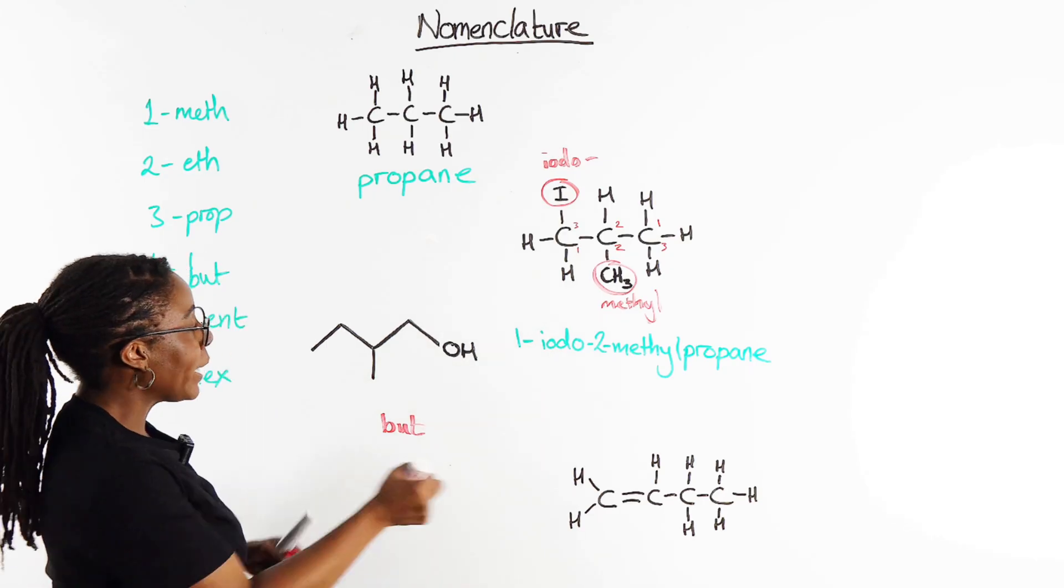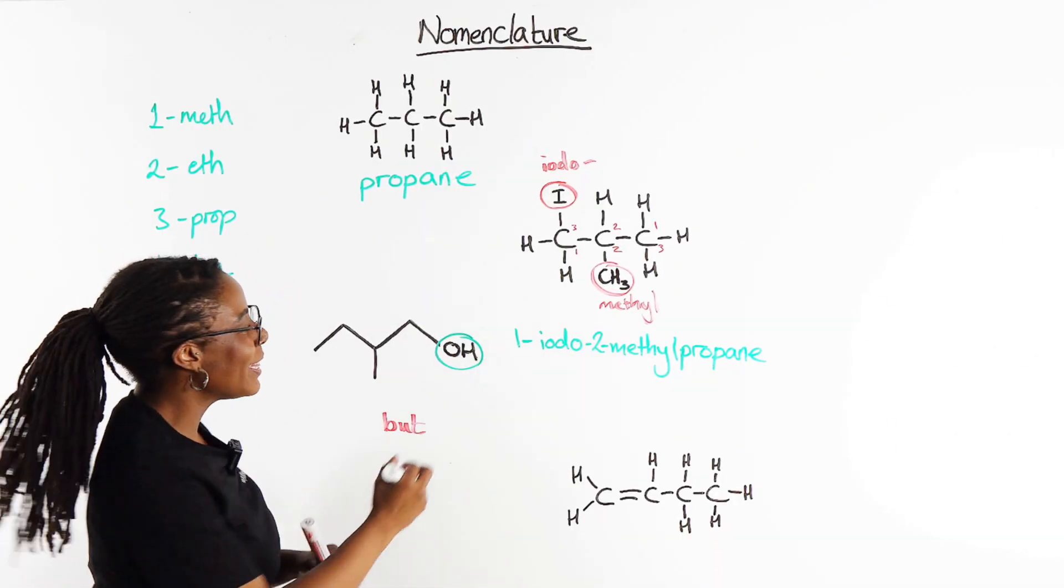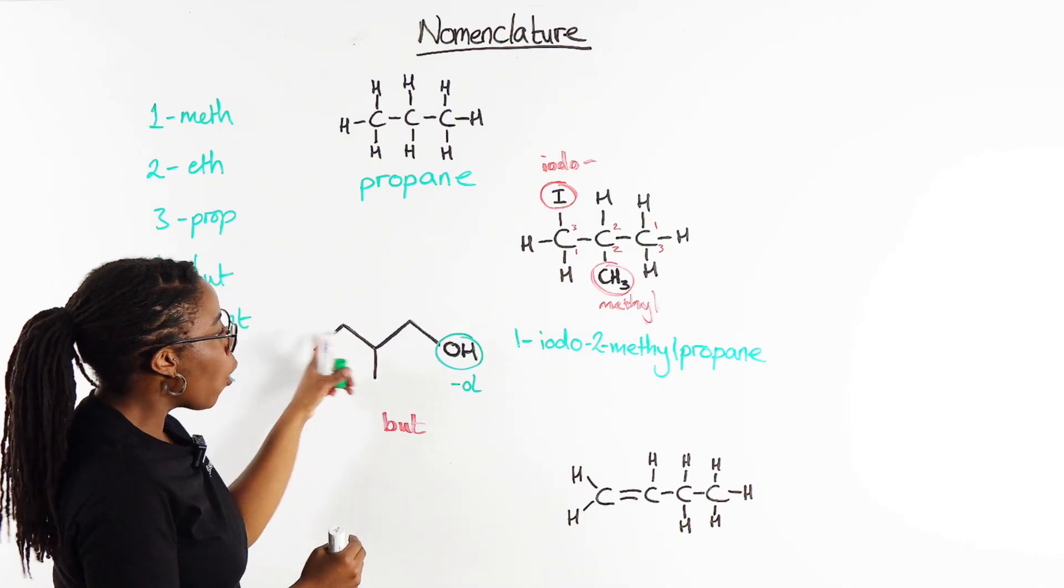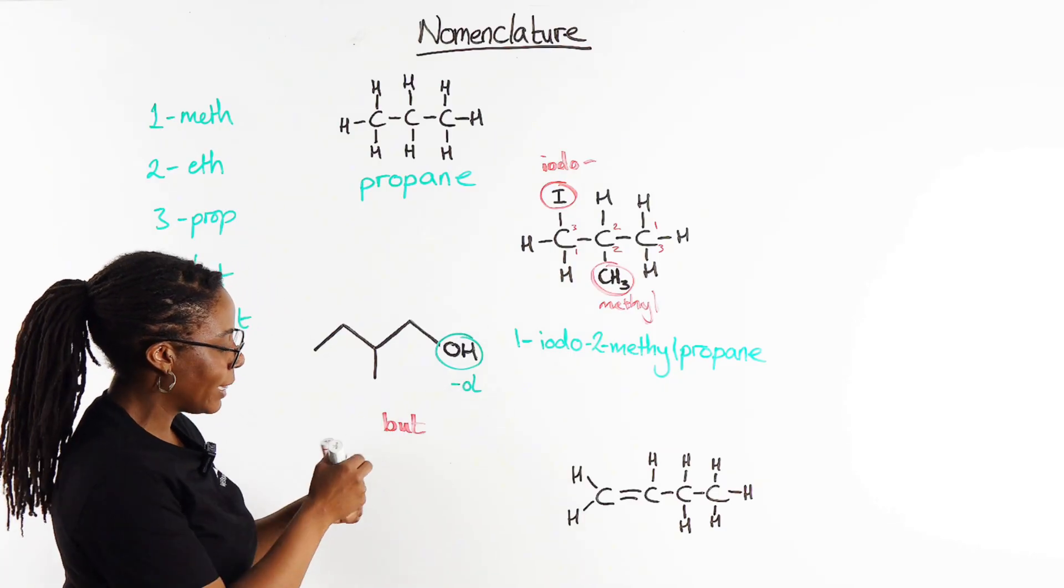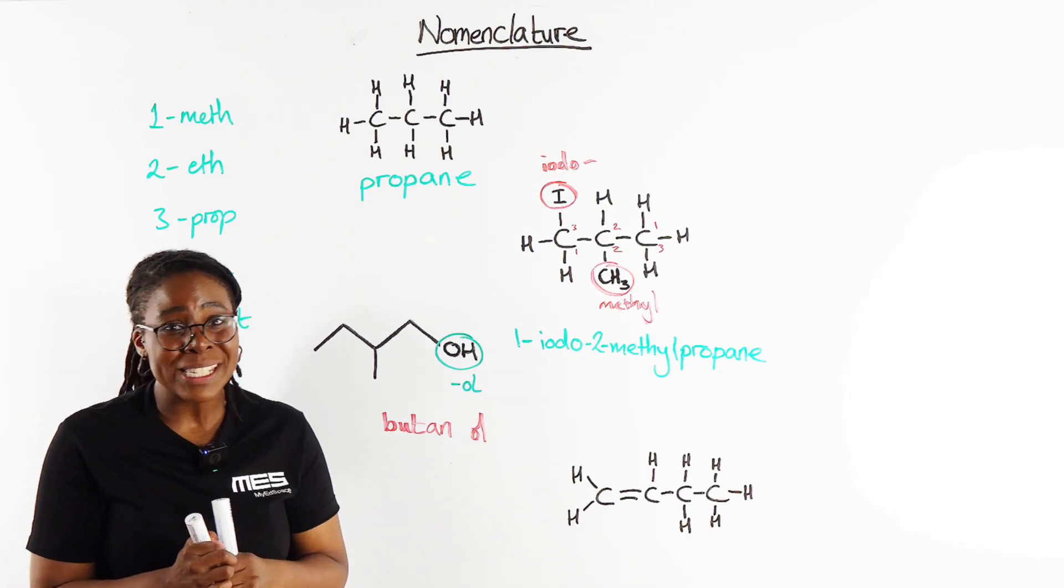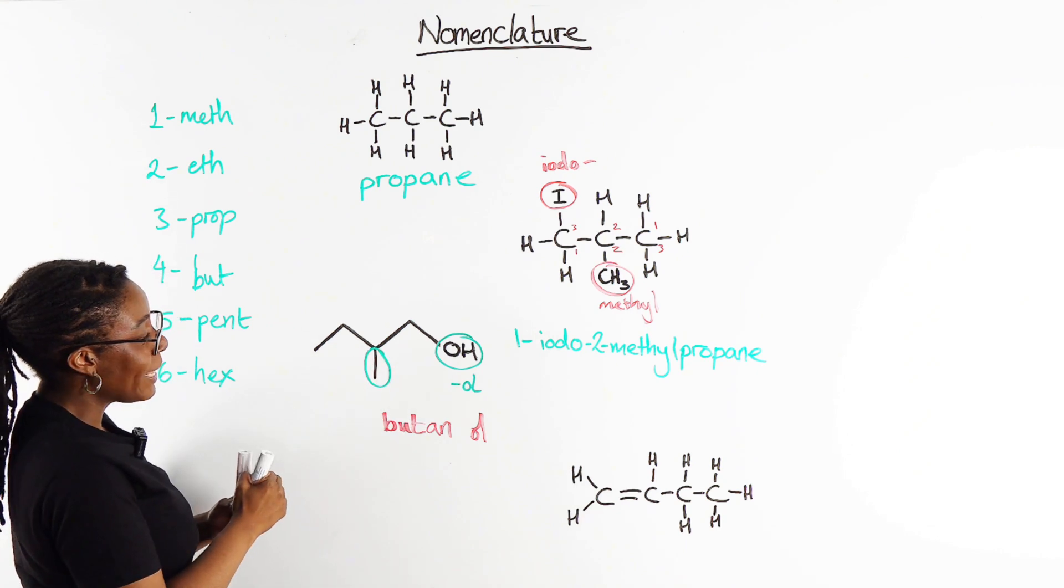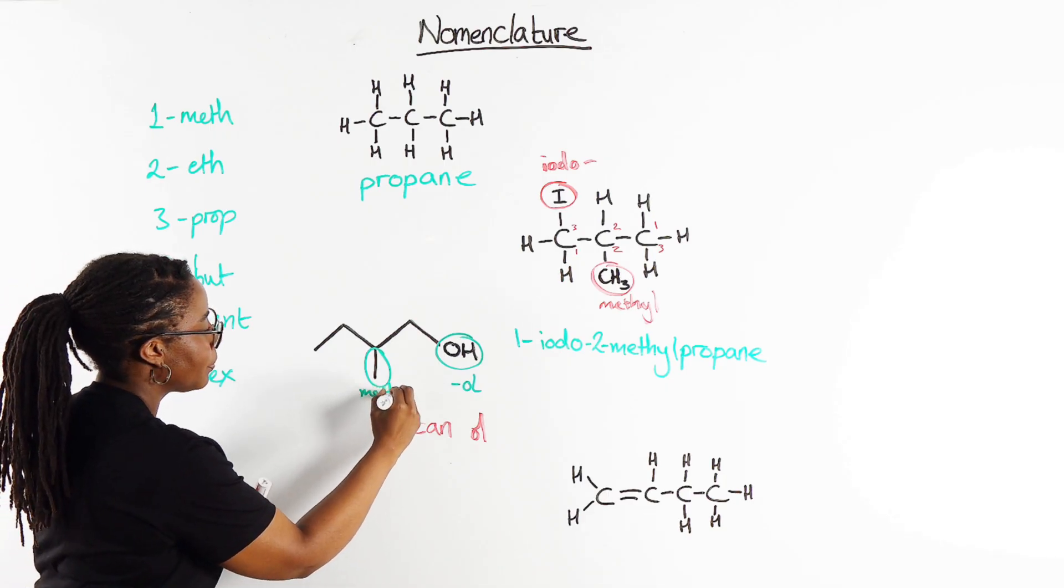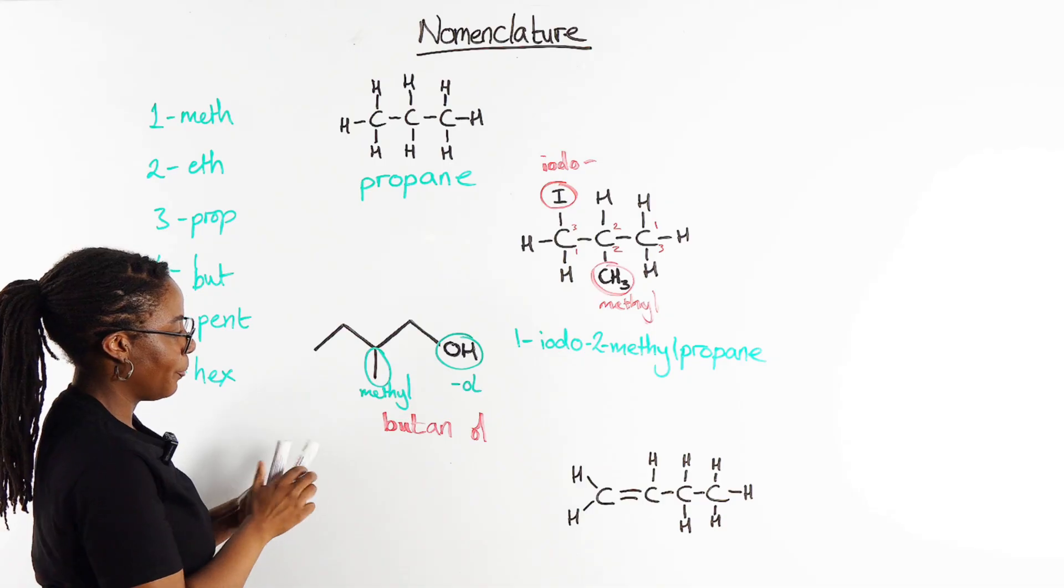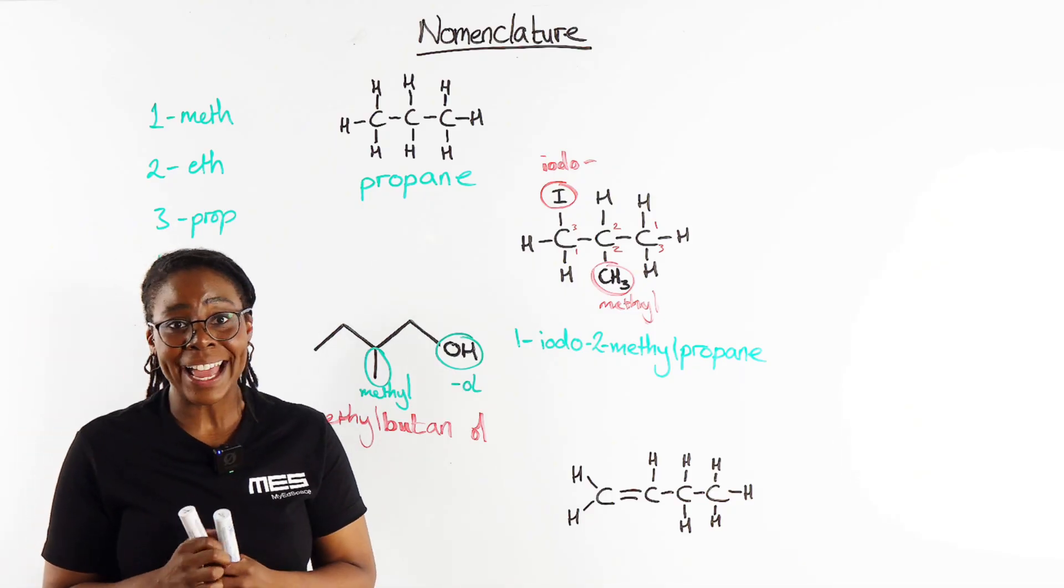So this being a four carbon chain of course is a but. So we have this OH group and so this would be given the ending -ol because this is our alcohol functional group. So only carbon-carbon single bonds and an -ol at the end, so this is going to be butanol.